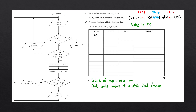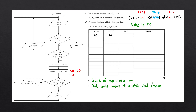Going back to the decision block, that means we follow the yes arrow and get to this process block. It says: diff1 is assigned 100 minus value. diff1 is a variable we're tracking in the trace table. Value is equal to 50, so 100 minus 50 equals 50. Let's fill in 50 under the diff1 column. We then follow the arrow to the next process block: diff2 is assigned value minus 50. 50 minus 50 equals zero. Let's fill in zero under the diff2 column.